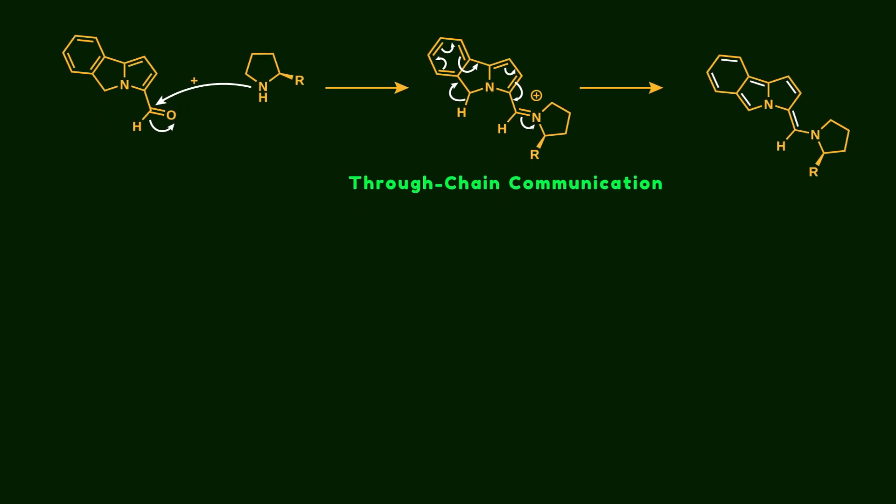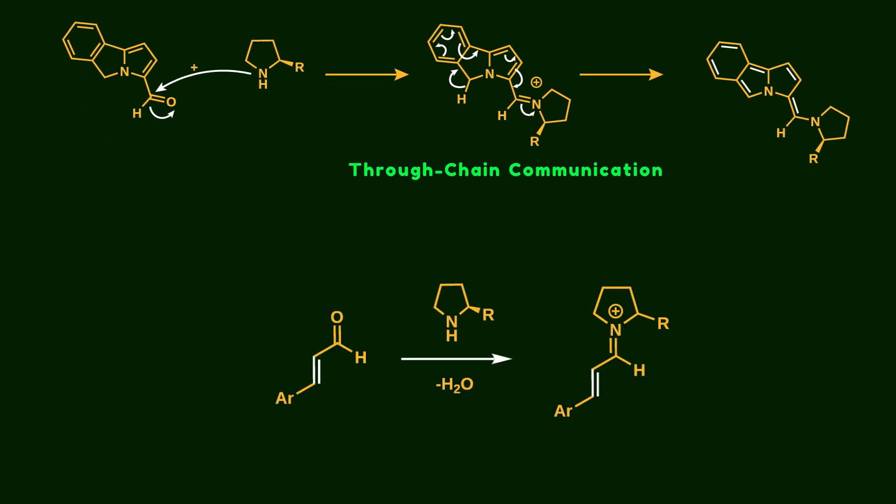Just like the 12π component, the 2π component is activated by the aminocatalyst, leading to the formation of an iminium ion. Notice that in this compound, the iminium ion acts as an electron-withdrawing group, setting the stage for the nucleophilic attack by the 12π component.